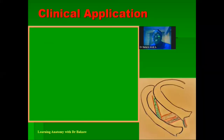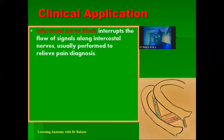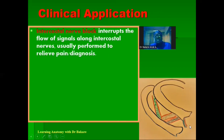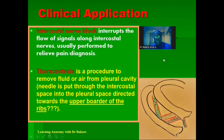For clinical application, intercostal nerve block is used to disrupt signal flow along the intercostal nerve in order to relieve pain or aid diagnosis. When an anesthetic agent is injected into the nerve, it blocks the transmission of pain signals.